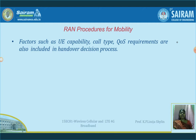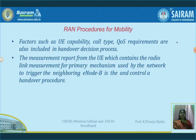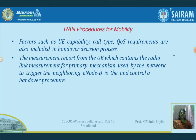Factors such as user equipment capability, call type, call establishment, call termination, and quality of service requirements are all included in the handover decision process. The measurement report from the user equipment is very, very important. This report will contain a radio link measurement, which is used by the network to trigger the neighbour eNodeB, and the control of the handover procedure — these two items are included in the measurement report.